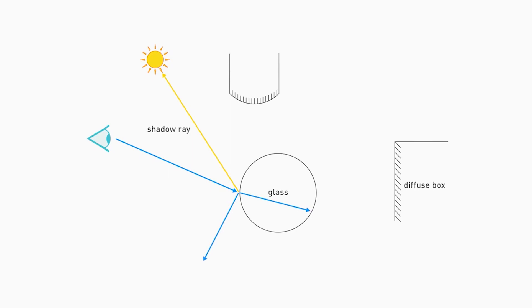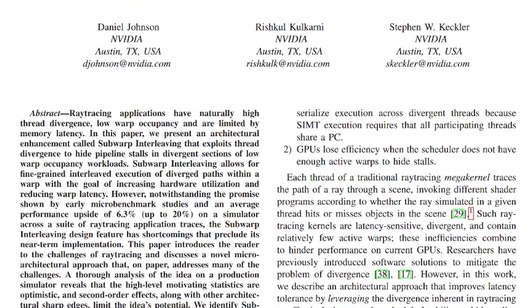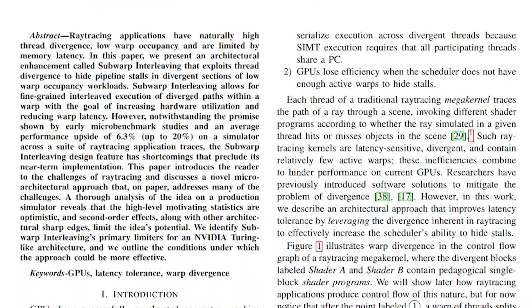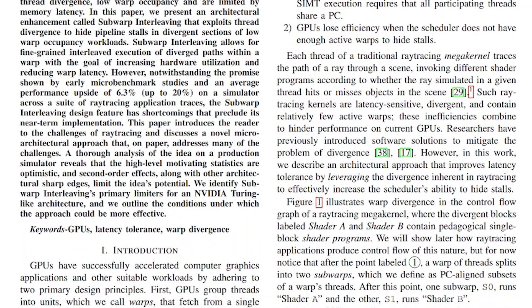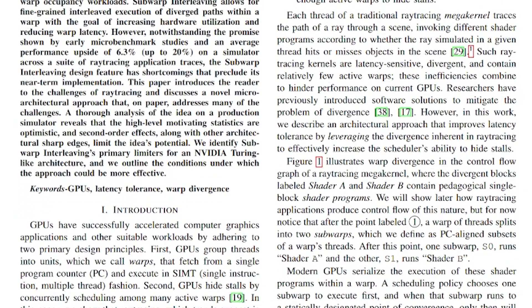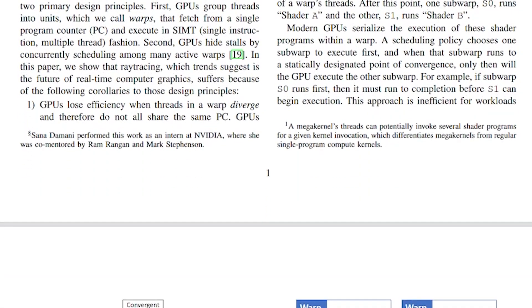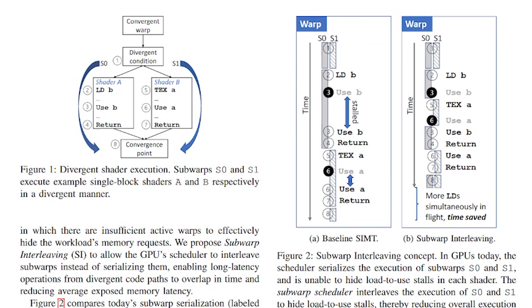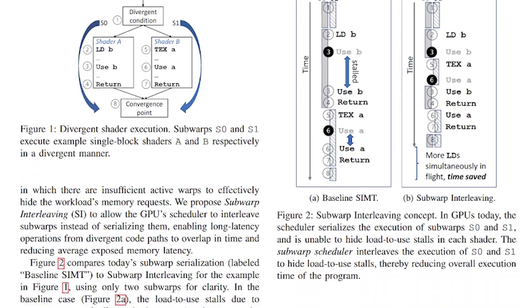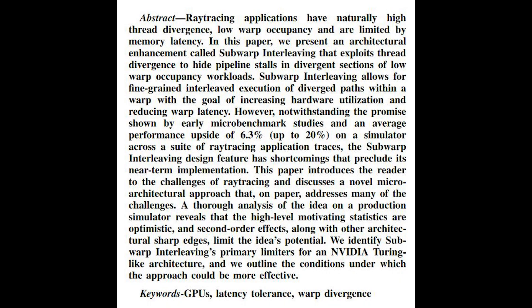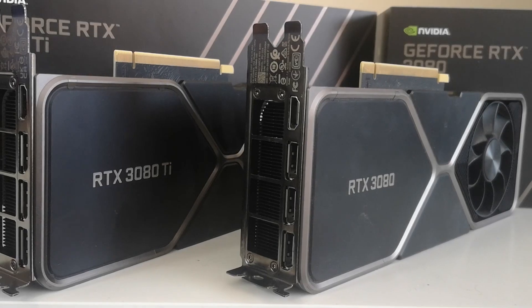This is actually a hardware thing. This is not something where they can just release a driver update and have RTX 20 series benefit from this — that isn't going to happen. The paper identifies sub-warp interleaving as addressing primary limiters for an NVIDIA Turing-like architecture. Ray tracing applications have high thread divergence, low warp occupancy, and are limited by memory latency — not memory bandwidth. That's a very important point.